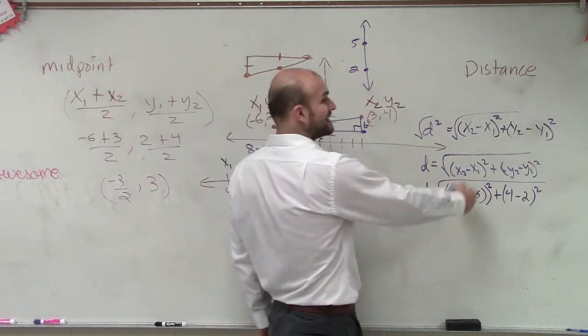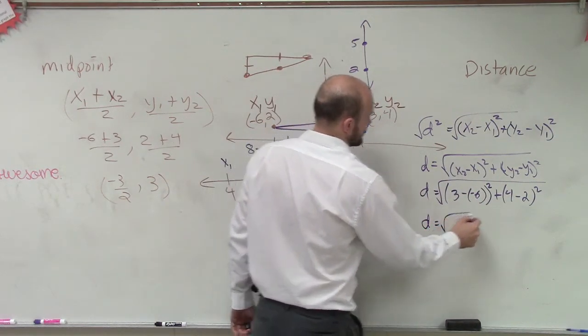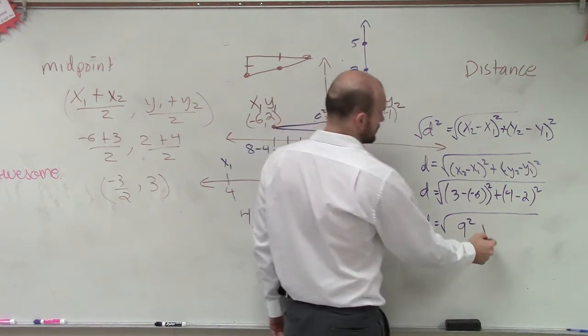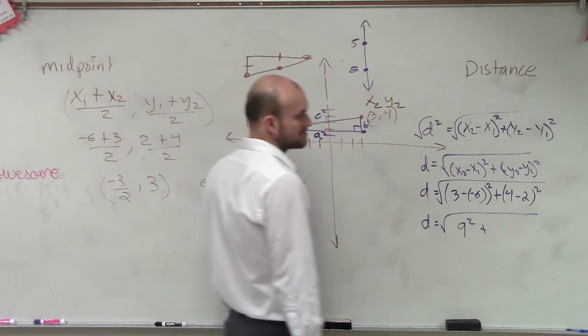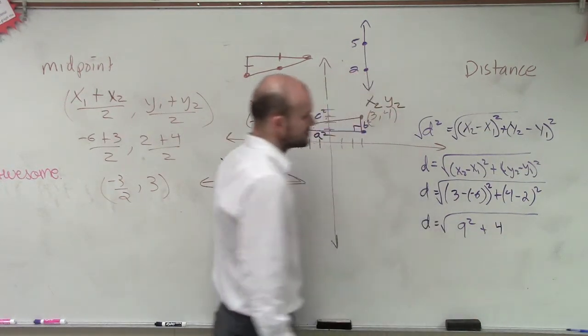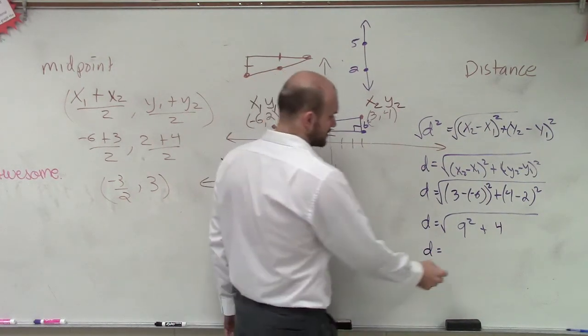So 3 minus a negative 6 is going to be 9, 9 squared, plus 4 minus 2 is 2, 2 squared is 4. So therefore, I have d equals square root of 81 plus 4, which equals square root of 85.